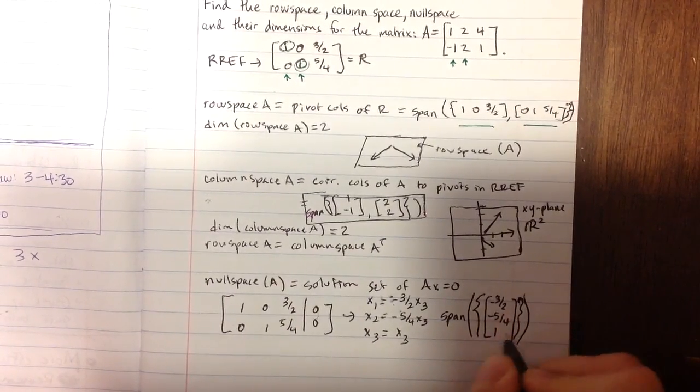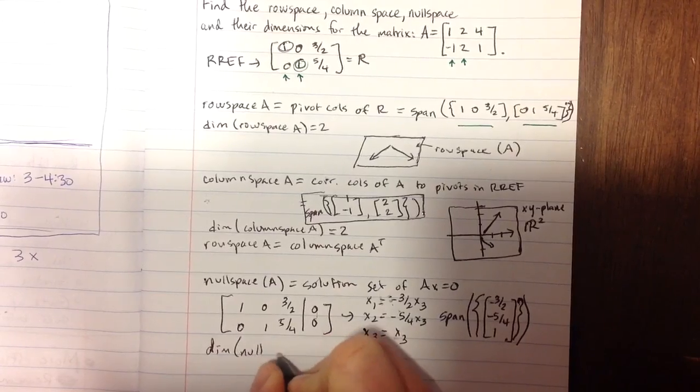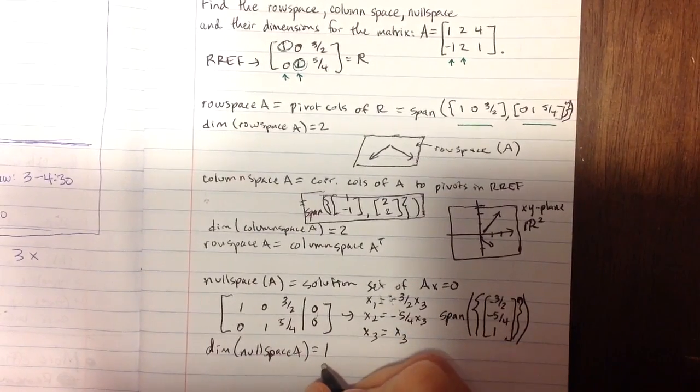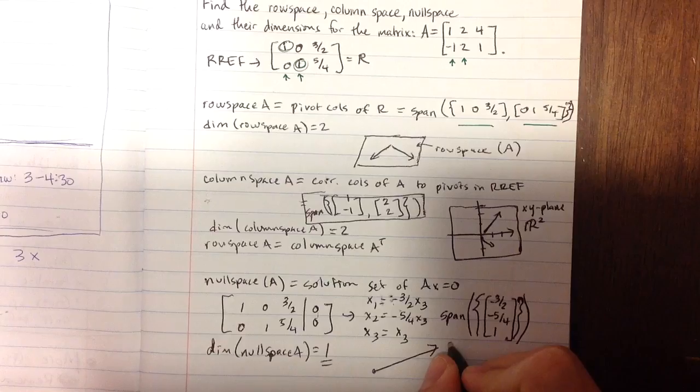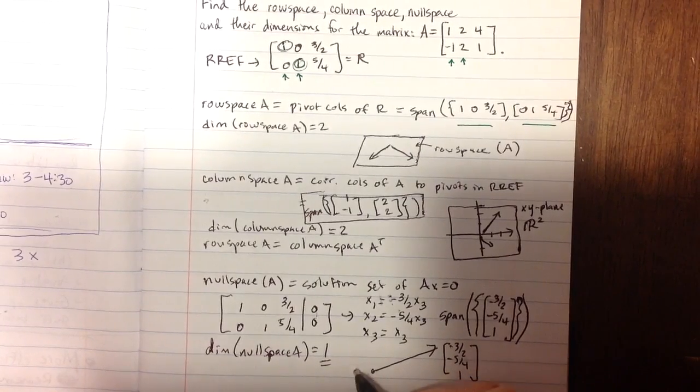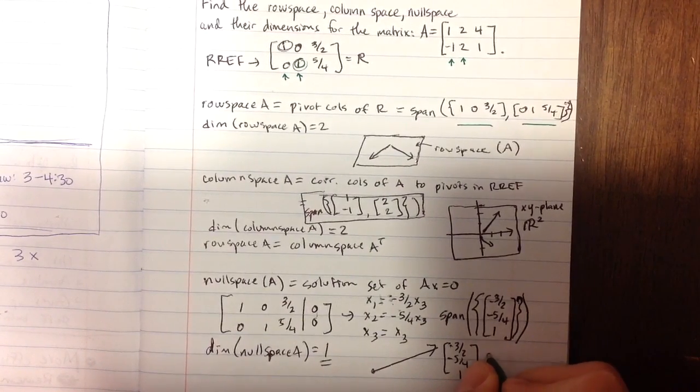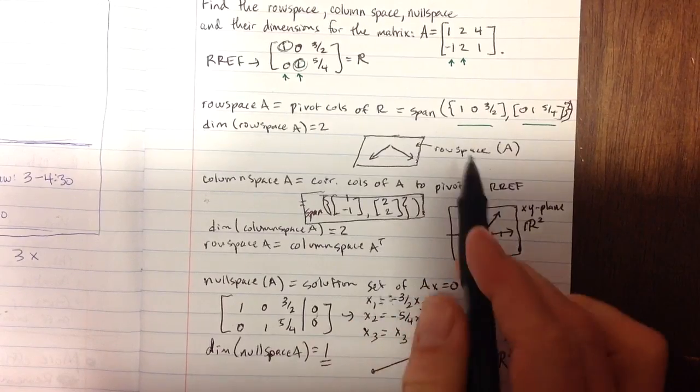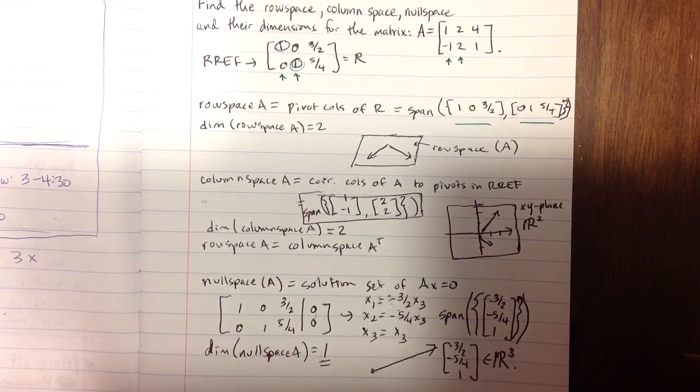Now you can see the dimension of the null space of A is going to be 1 - there was only one vector there. It's going to be multiples of this vector in 3-space. If you take this vector and all multiples of it, you will get the null space, which lies in R3. Remember, those lie in R3, where this set lied in R2, and this set also lied in R3. I hope this helps you with the concepts of row space, column space, and null space and dimensions. Thank you.